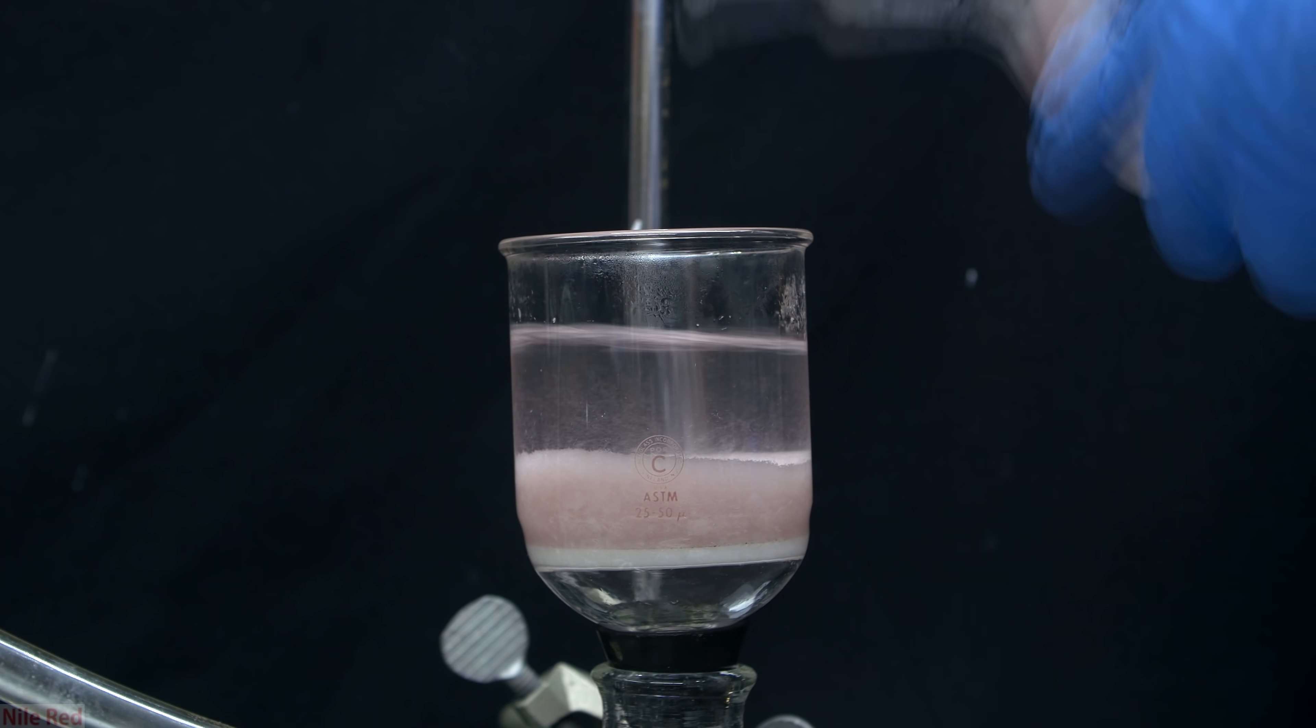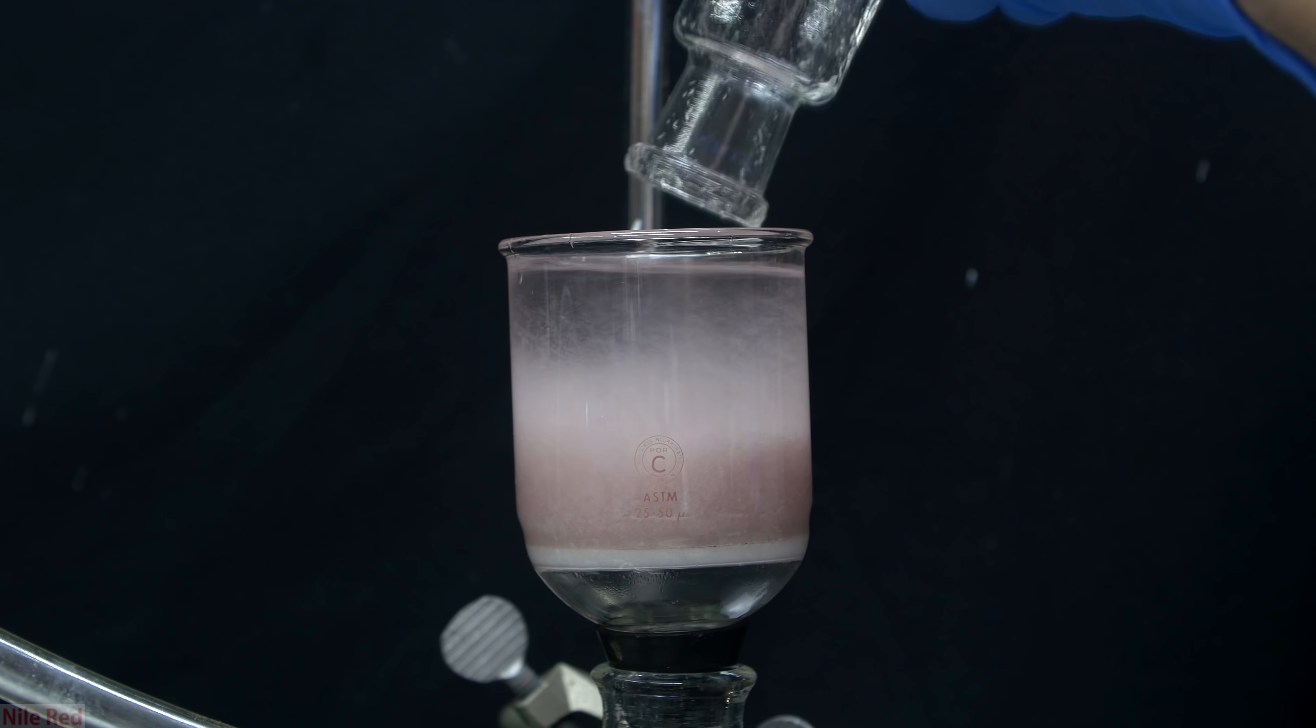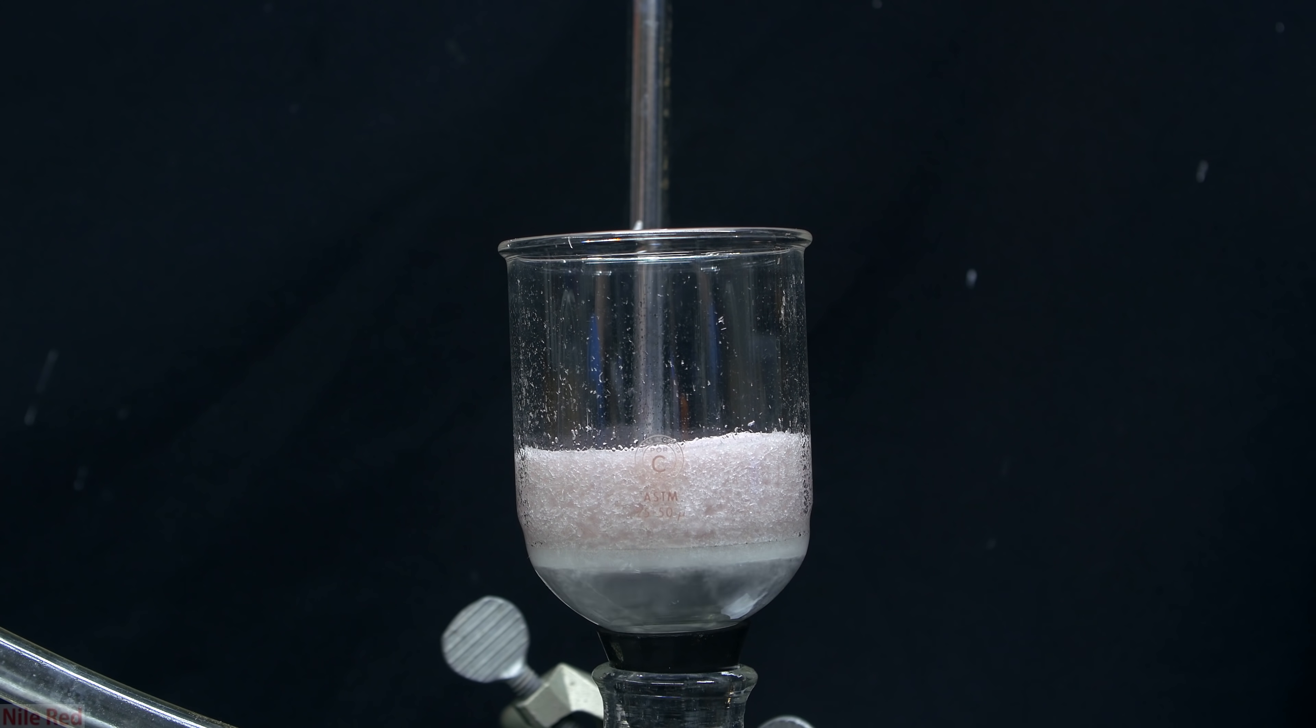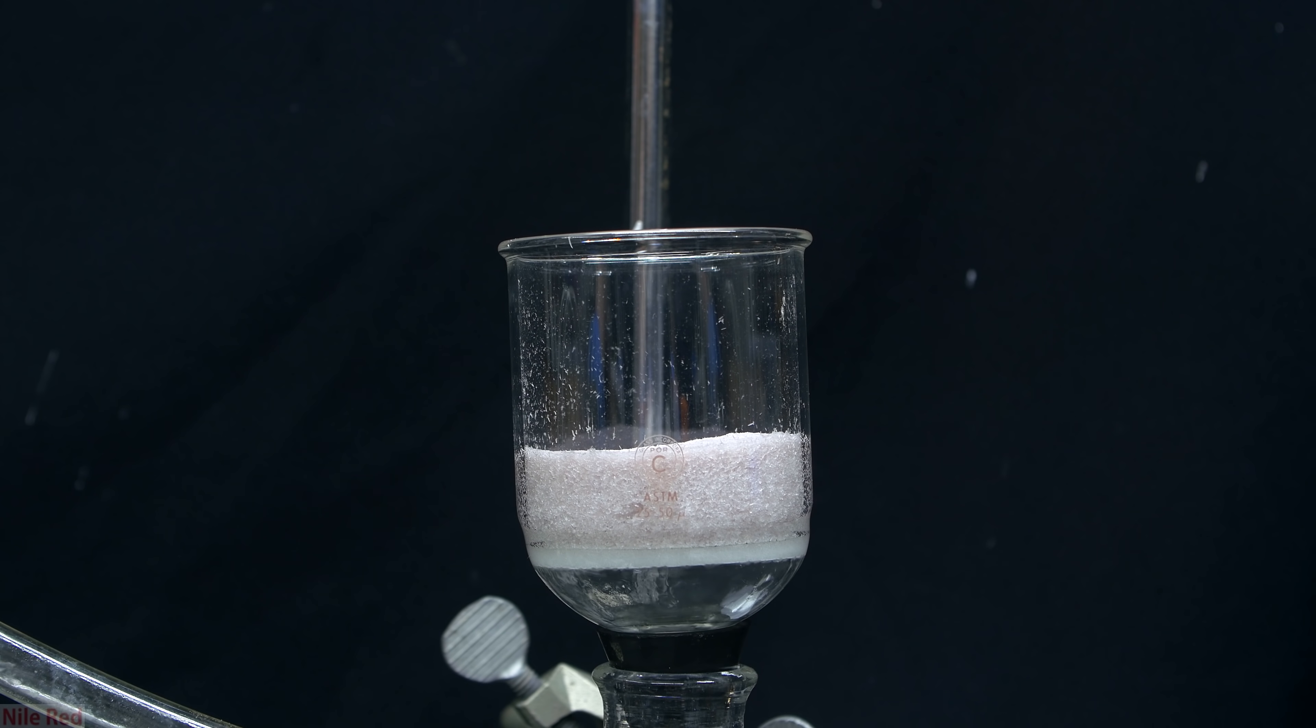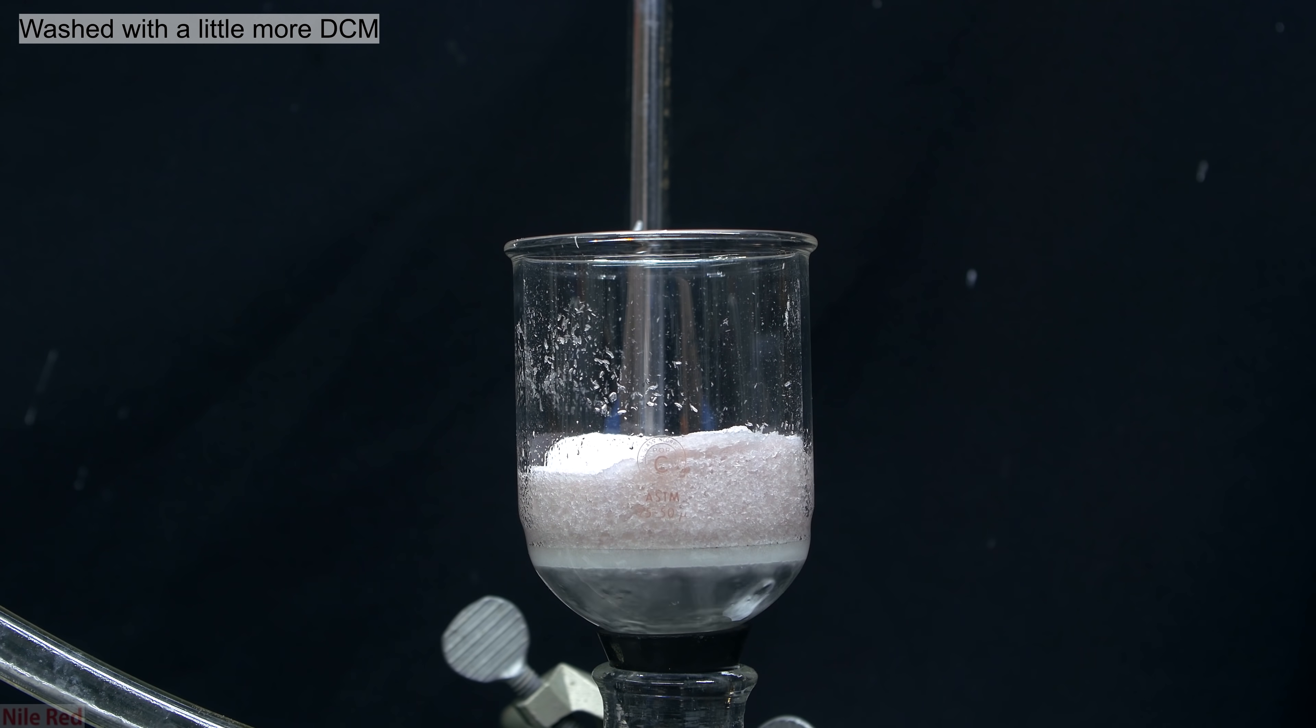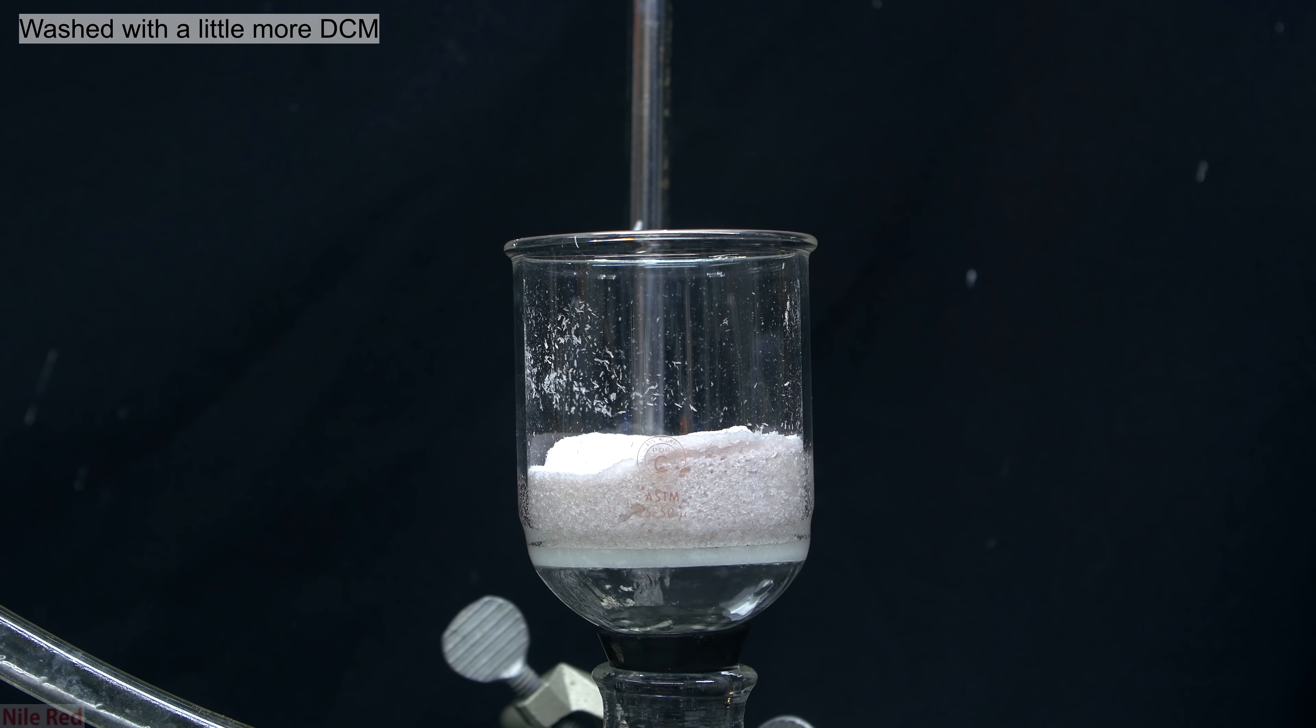Once I had washed it with a little bit of DCM, I transferred everything to a vacuum filter flask. When I turn on the vacuum, everything is very quickly pulled off, and I go ahead and wash it a few more times with a little bit of DCM. Once the rest of the DCM had been pulled off, I leave the vacuum on for several seconds, just to try to pull away as much as possible.